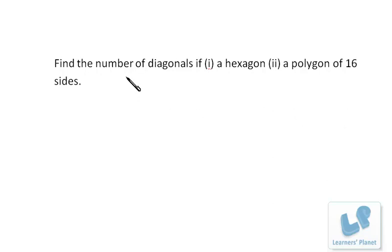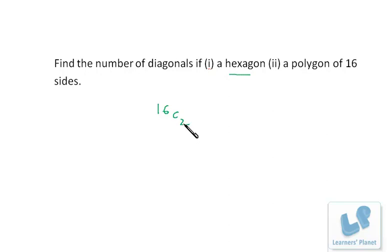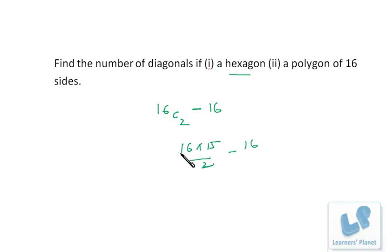Find the number of diagonals in a hexagon and a polygon of 16 sides. For a polygon of 16 sides, we get a line by matching two points, so we take all combinations of two points: 16C2. But not all lines are diagonals — matching two adjacent points gives sides, not diagonals. So we deduct 16: it's 16×15/2 − 16 = 120 − 16 = 104 diagonals in a polygon of 16 sides.